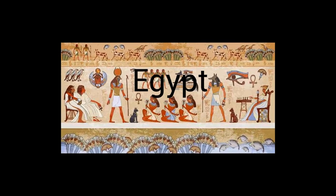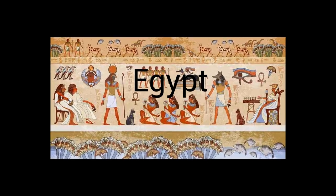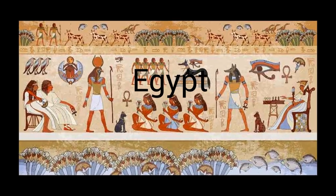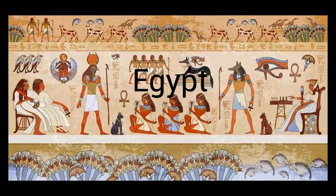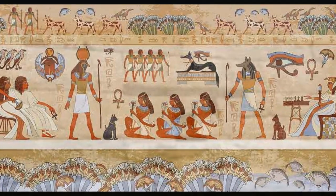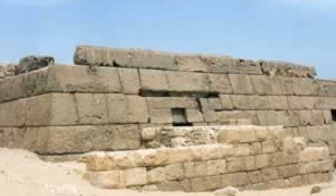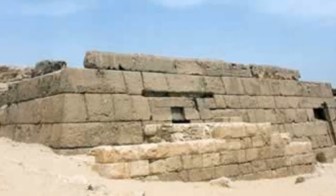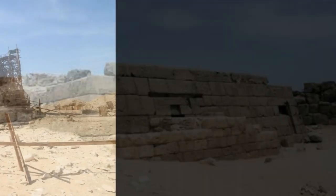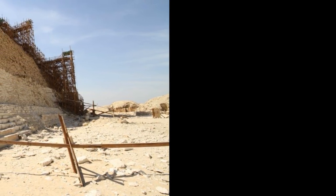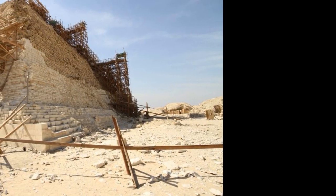Egypt. Adobe, or sun-baked mudbrick, construction was used for buildings and houses in ancient times and is still commonly used in rural Egypt. The hot, dry climate was ideal for mud brick, which tends to wash away in the rain. Extensive storehouses with mud brick vaults still survive, all constructed with sloping courses to avoid the need for formwork.